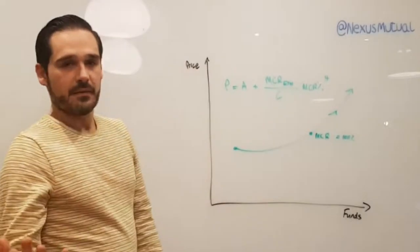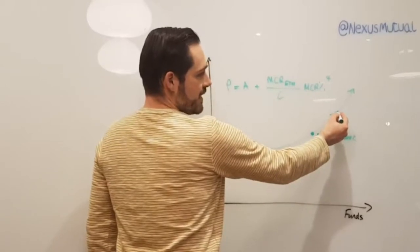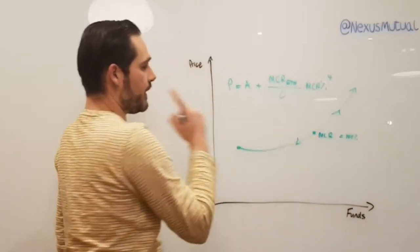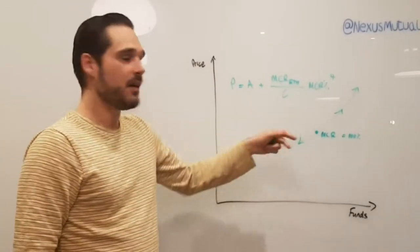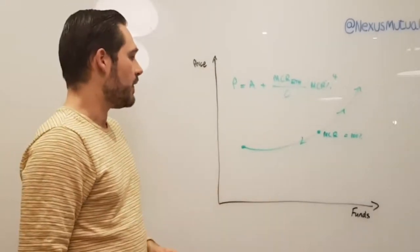If we have a few claims, that takes funds out of the DAO, and the mutual becomes slightly less funded, then the pricing drops and it might go below 100%. So in this way, we encourage dynamic capital in and out of the mutual.